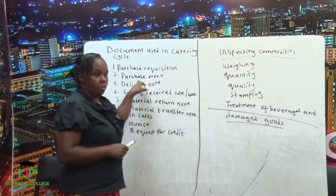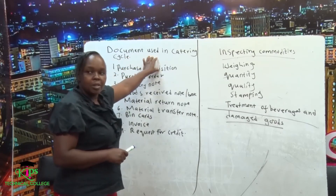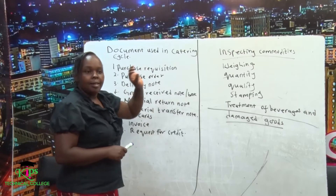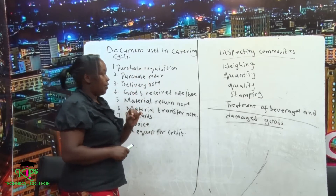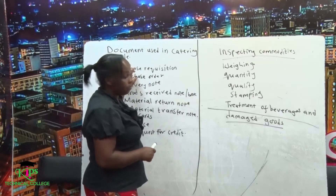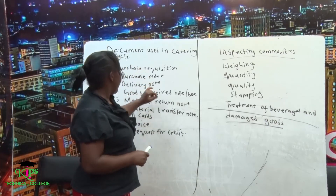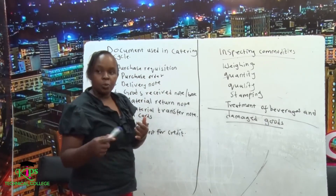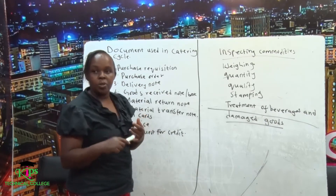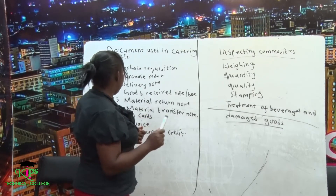We have a purchase order. After writing the purchase requisition, a purchase order is developed by the receiving store man who prepares it. The purchase order: one copy remains, another copy goes to the accounts department, and another copy goes to the supplier.